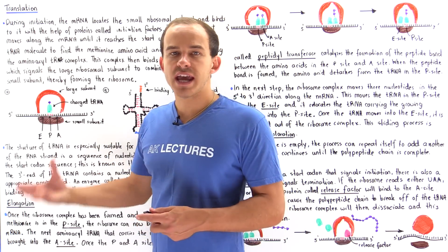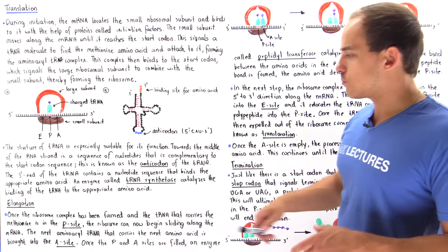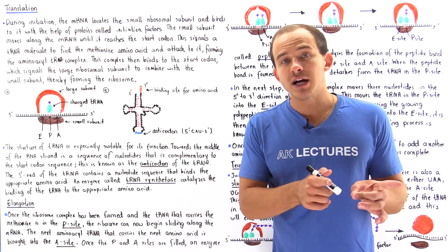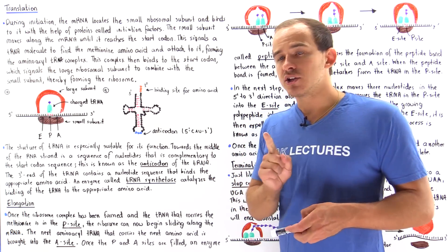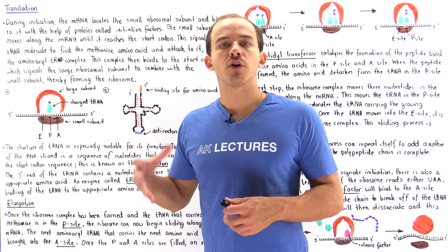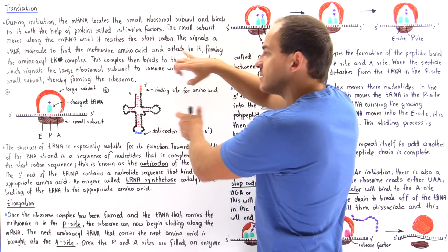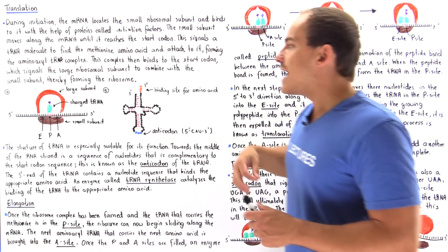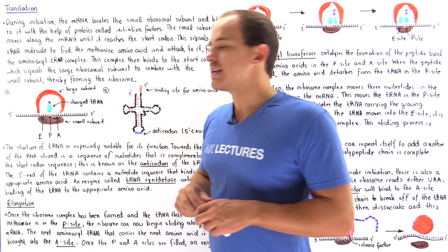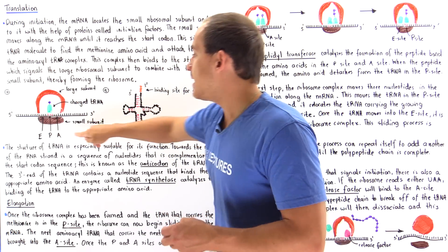Let's move on to the process of elongation, which is the second step in the process of translation in which we synthesize our protein. Once initiation takes place, once the ribosome complex is formed, and once our charged tRNA molecule that carries methionine binds to the P site, the ribosome can then begin moving along our mRNA. But before the movement actually takes place, another tRNA molecule must find the appropriate amino acid and bring it to the A site of our ribosome.